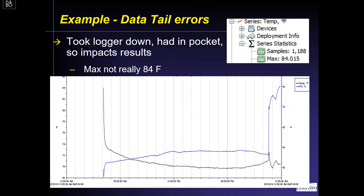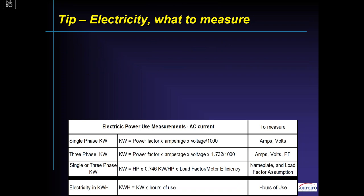Here's a data tails example. I started a logger, was about to walk out the door to place it in a process room, but someone stopped me and I had it in my pocket. You can see the black line — the temperature reads 84°F, and then when it got to the space a few minutes later it immediately dropped to 72-70°F. If you look at the statistics on the logger, it'll say the maximum temp was 84°F — but that's a data tail. That's inaccurate because I started it inappropriately.